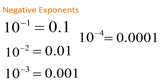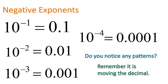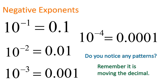10 to the power of negative 4 is 0.0001. Notice it's not the number of zeros anymore, but it's the number of places we move the decimal, if we start at the number 1. We shift it 1 place for negative 1, 2 places for negative 2, 3 places for negative 3. And you can see that pattern continuing, and it will continue when we multiply numbers times these powers of 10. Let me show you.